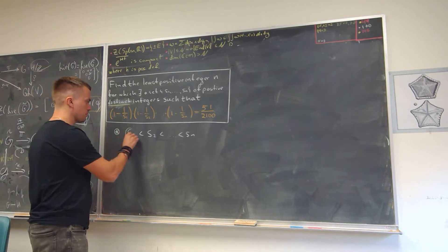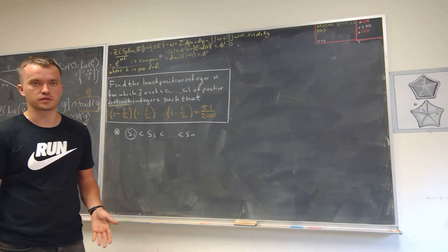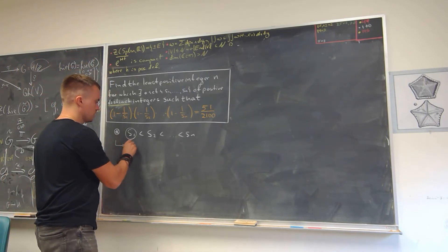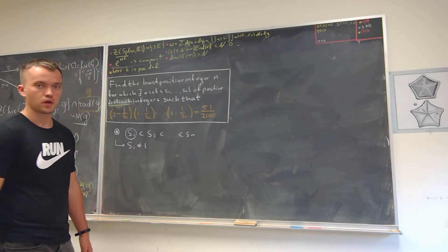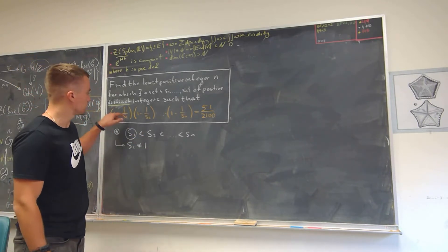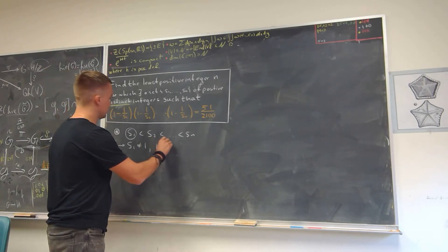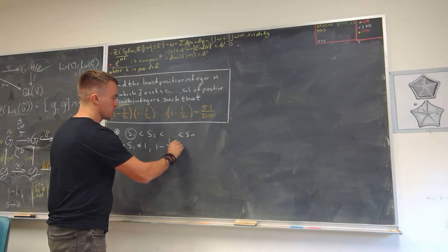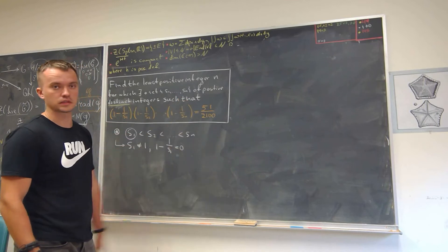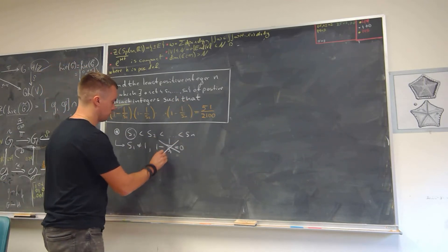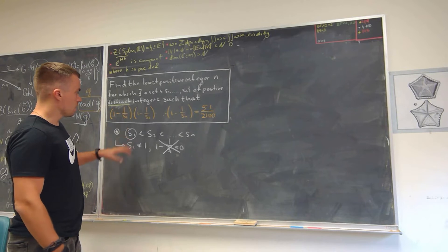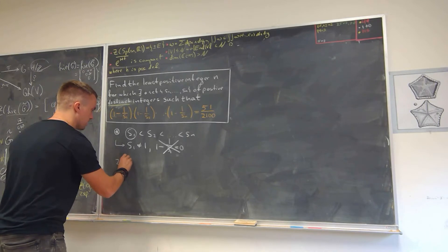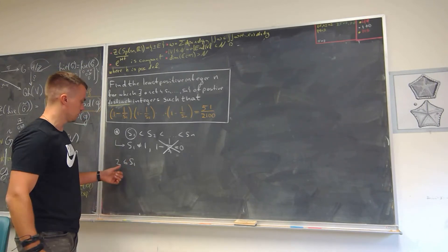My second observation: I can take my first element s1 and analyze it. What I can say about s1 is that s1 is for sure not equal to 1, because if s1 is equal to 1, then the expression 1 minus 1 over s1 is going to be equal to 0, and so the whole product is going to be equal to 0. That is not possible. Using this information, I can say that s1 is going to be bigger or equal to 2.